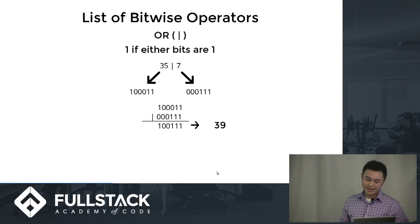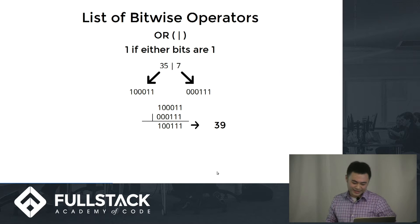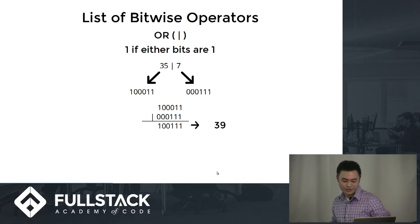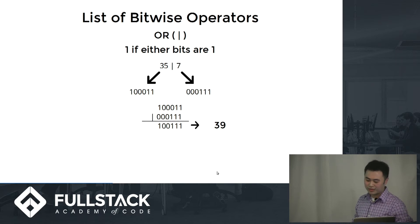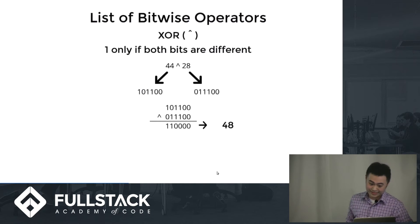OR: 35 OR 7. It's a very long binary, so I'm just going to cut it short. When you OR those two together, you get 1, 0, 0, 1, 1, 1, which represents 39 in binary and 39 in decimal.